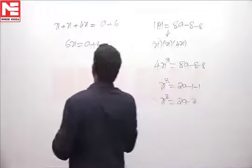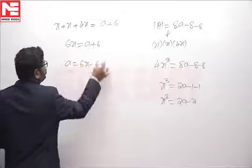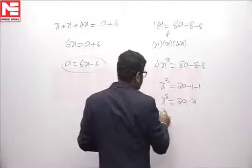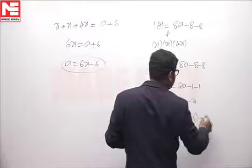You can write A value from this: A is equal to 6x minus 6. Substituting A value here, x cube equal to 2 into 6x minus 6 minus 2.